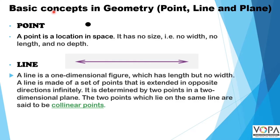Basic concepts in geometry: point, line, and plane. A point is a location in space — it has no size, that is, no width, no length, and no depth. A line is a one-dimensional figure which has length but no width.